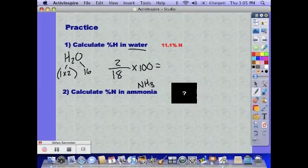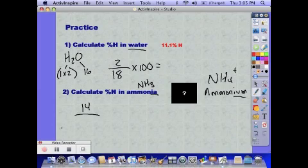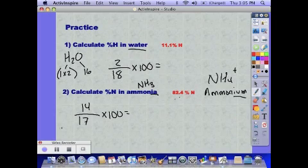Ammonia is NH3. Make sure that you remember what ammonia is, not to be confused with ammonium, which is a polyatomic ion. Nitrogen weighs 14 grams out of 17 for the entire mass of ammonia. So the percent ammonia is 82.4%.